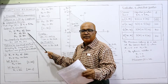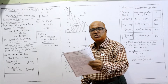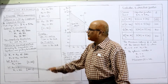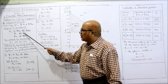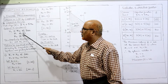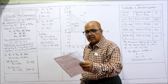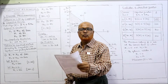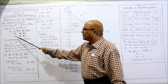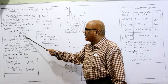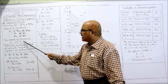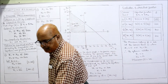Second constraint: x1 less than or equal to 80. We don't have x2 here, only x1 less than or equal to 80. Third constraint: x2 greater than or equal to 80. And non-negativity restriction: x1 and x2 are greater than or equal to 0.